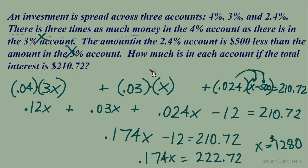x was representing the amount of money in the 3% account. Now we can go to our other amounts. In 4% account, we had 3x. So 3 times $1,280. We'll get $3,840. And in our last account, the 2.4% account, we had $500 less than the 3% account. So we have 1,280 minus 500. Leaves us with $780 in the last account.